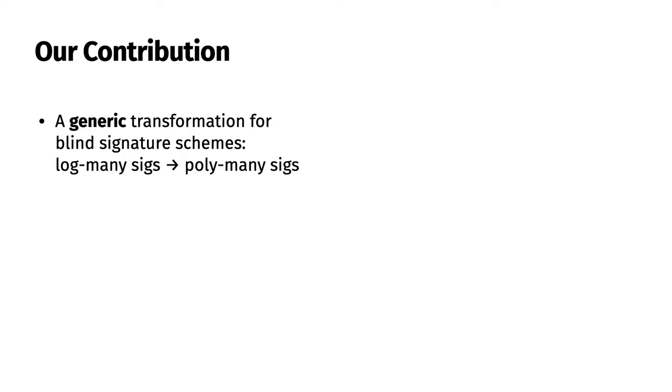We achieve this goal by constructing a generic transformation that transforms a blind signature scheme supporting logarithmically many signatures to one that supports polynomially many. Specifically, our transformation operates on blind signature schemes which arise from algebraic hash functions with certain homomorphic properties. This is expanded on later.